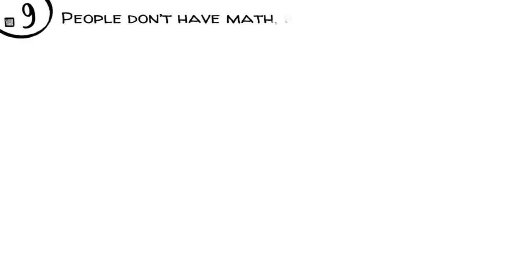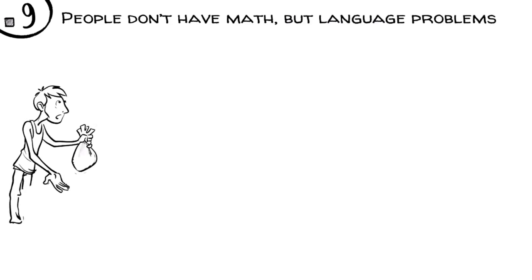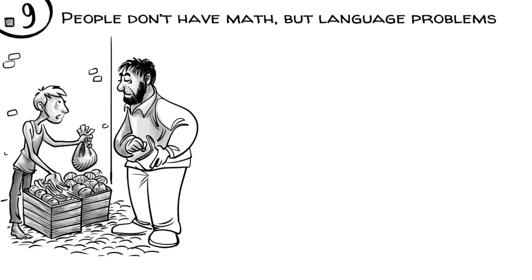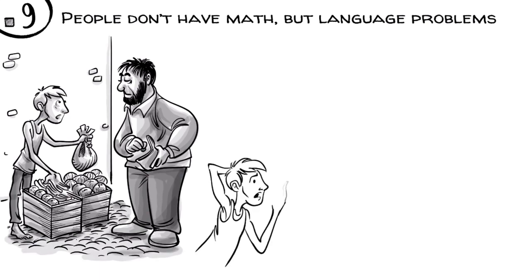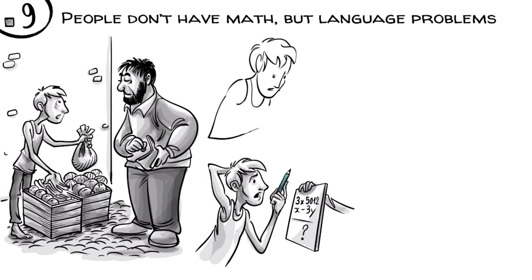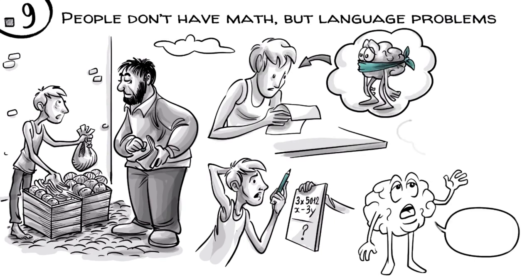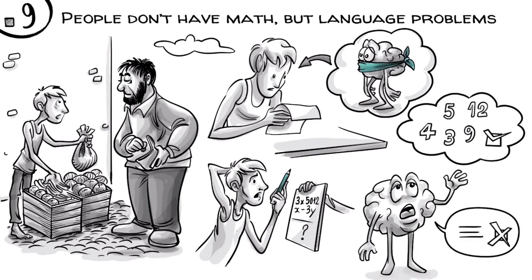Most people don't have math but language problems. We know, for example, that eleven-year-old unschooled street vendors are often highly proficient in complex money transactions but incapable of doing paper and pencil arithmetic. This phenomenon, known as street mathematics, shows that when smart kids struggle in school, they often just can't express their thinking in symbols. Their brains can do math but have language problems.